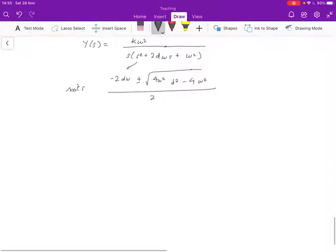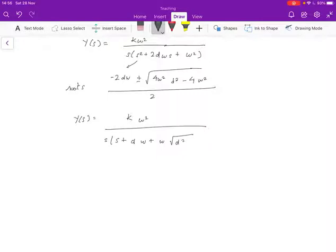And so given this, the partial fraction expansion turns out to be a bit messy, but this is what it is. So Y(s) is going to replace the roots by k omega squared over, we're just going to rewrite this in terms of the roots: s times (s plus d omega plus omega square root d squared minus 1) and (s plus d omega minus omega square root d squared minus 1). So this is just substituting the roots over here.